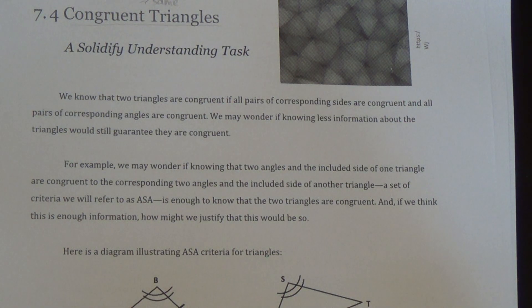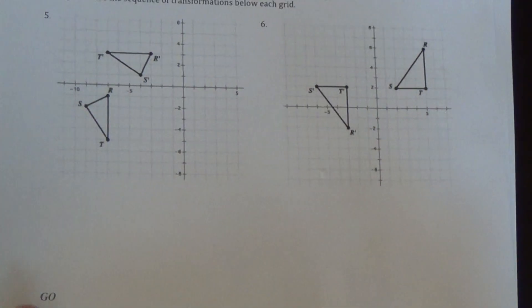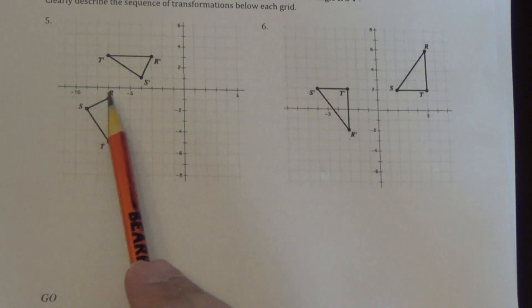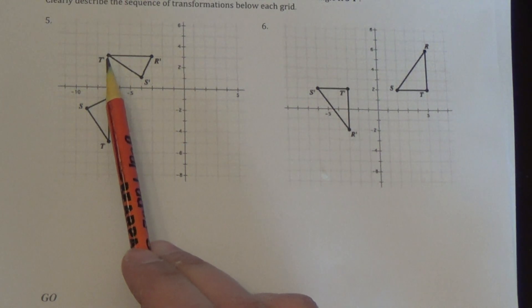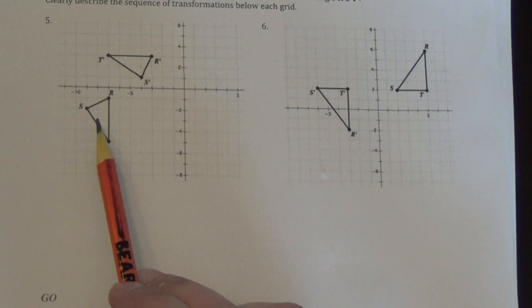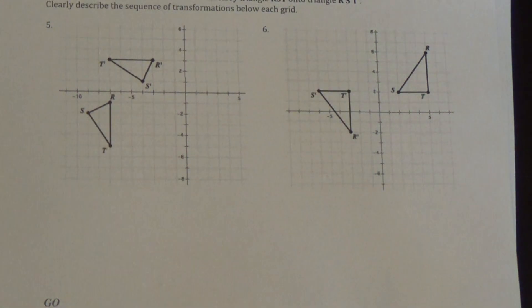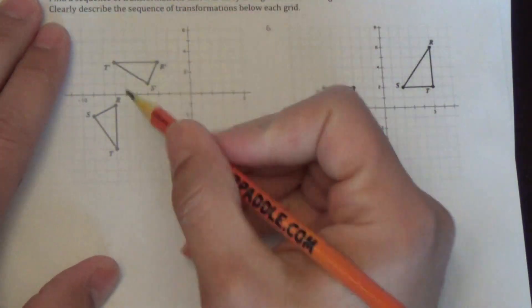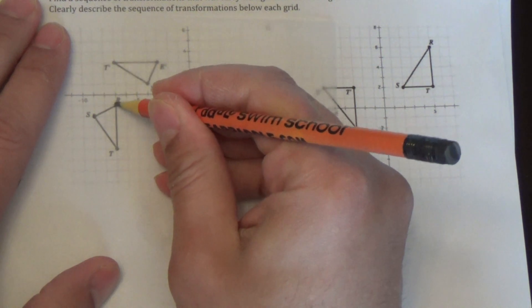When we last left off from 7.3, your homework assignment was to take a couple of triangles — you were given a pre-image, the SRT triangle — and just create a sequence of transformations that would put this triangle on top of that triangle. I'm going to show you now with some patty paper to show us what we did. It's a little bit quicker, and you'll be able to see what congruent triangles mean.